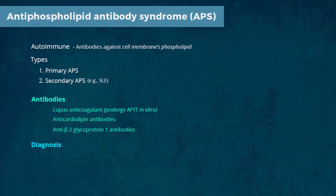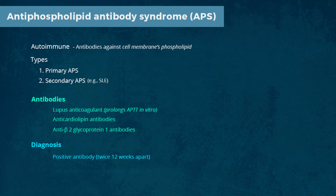Diagnosis of the disease depends on the persistent presence of antiphospholipid antibodies — that is, positive at least twice, 12 weeks apart — along with clinical features of thrombosis or recurrent fetal loss.